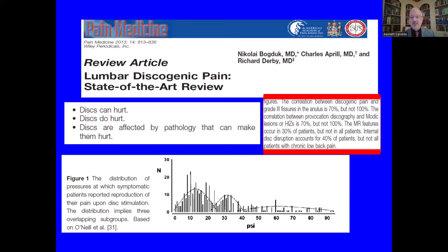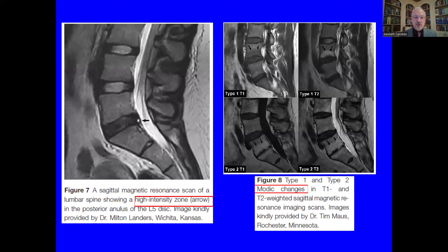Furthermore, internal disc disruption characteristic of discogenic pain is only found in approximately 40% of patients with chronic low back pain due to a discogenic source. On MRI T2-weighted images, the high-intensity zone shows an area of discontinuity in the intervertebral disc — a small white speck consistent with edema and inflammation from a recent annular tear. Modic changes are found in the bony matrix and reflect edema and inflammation with type 1, or marrow ischemia and fatty conversion with type 2, but again are only seen in approximately 70% of individuals with discogenic-related pain.